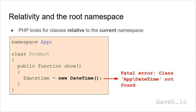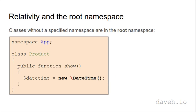So what happens when using a class that's inside a namespace to the code inside the class? Well, this class, for example, is in the app namespace. If you try and use another class like this, you'll get an error. This is because PHP looks for classes relative to the current namespace. So to refer to a class in another namespace, you need to give it a backslash. The class here, for example — datetime — doesn't have a namespace, so it's in what's called the root namespace. Any class that doesn't have a namespace defined is in this root namespace.